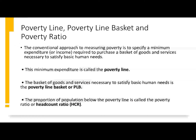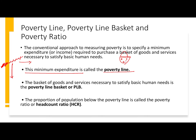The poverty line is the minimum expenditure required — the threshold expenditure below which you cannot survive effectively. The poverty line basket, or PLB, is defined as the minimum expenditure required to obtain a basket of certain goods and services. The proportion of the population living below the poverty line is called the head count ratio.